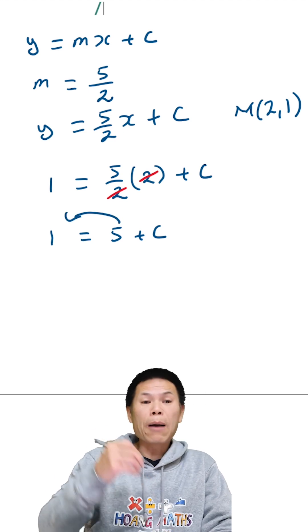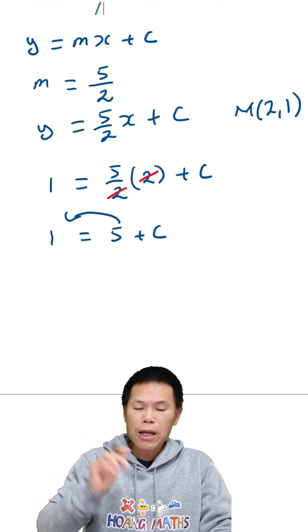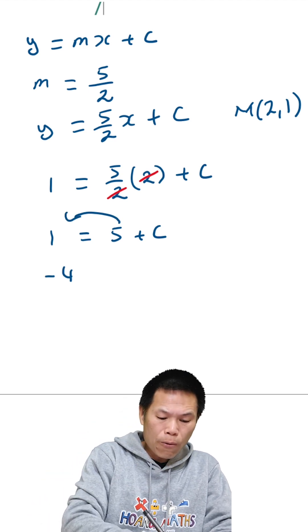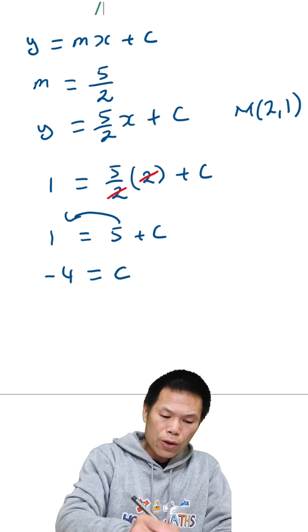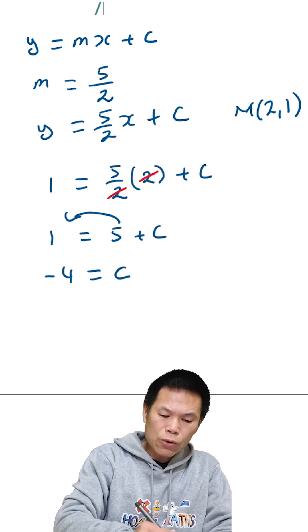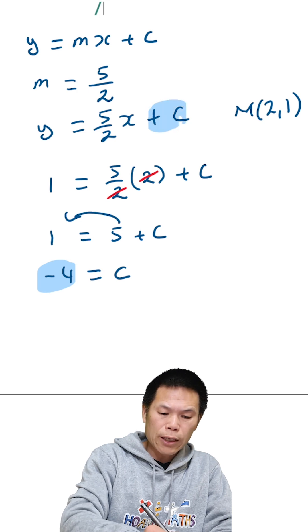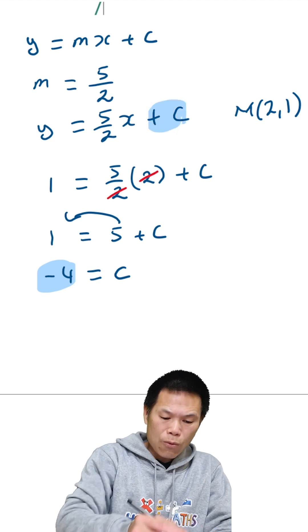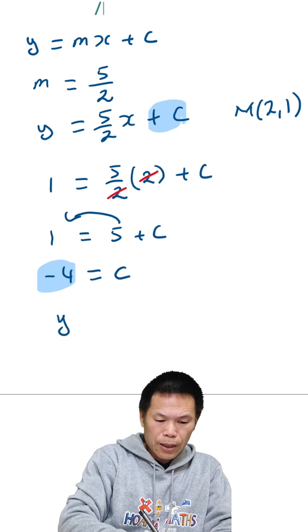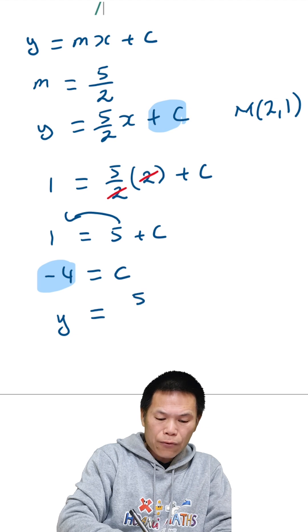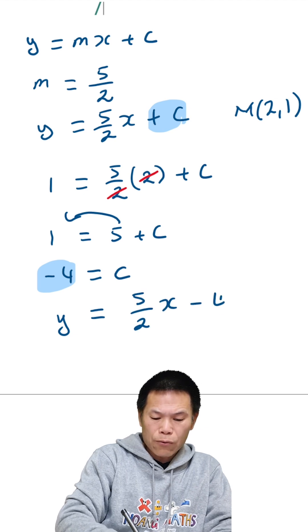So that is c equals negative four. We just substitute negative four into here, so that is y equals five over two x minus four.